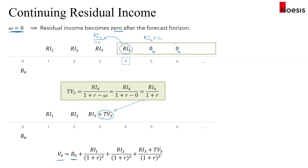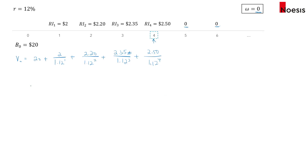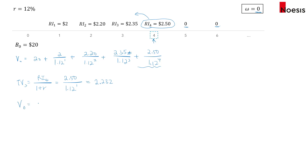Using the terminal value formula, the terminal value in year three equals RI4 divided by (1 + r), so that's 2.50/1.12, which equals approximately 2.232. An alternative way to write this is: 20 + 2/1.12¹ + 2.20/1.12² + 2.35 + 2.232/1.12³.